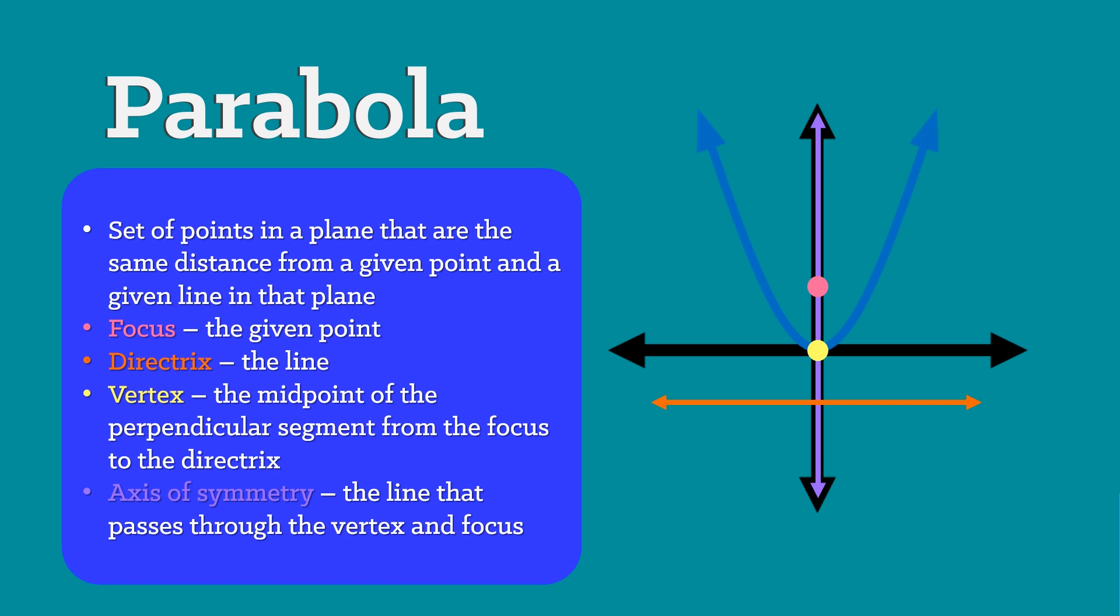It is a set of points in a plane that are the same distance from a given point and a given line in the plane. It contains parts like the focus, directrix, vertex, and the axis of symmetry.